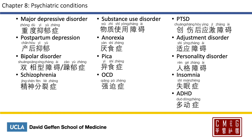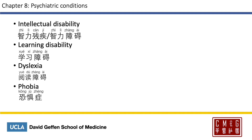PTSD is 创伤后应激障碍, 应激 meaning responding to stress. Adjustment disorder is 适应障碍. Personality disorder is 人格障碍, so obsessive compulsive personality disorder is 强迫性人格障碍. Insomnia is 失眠症. ADHD is 多动症. Intellectual disability is either 智力残疾 or 智力障碍. Learning disability is 学习障碍. Dyslexia is 阅读障碍. Phobia is 恐惧症. 障碍 means a barrier.